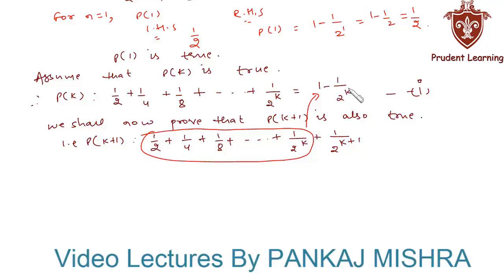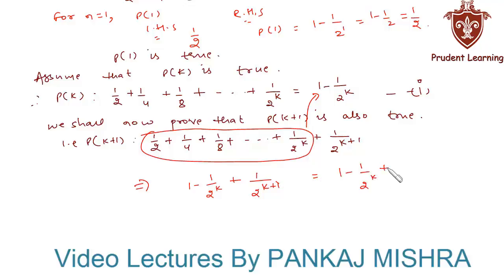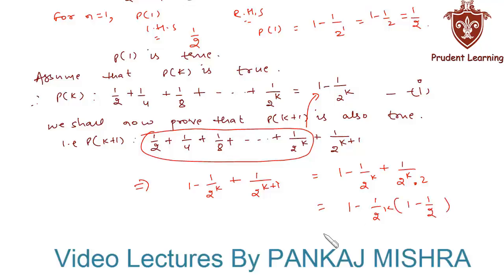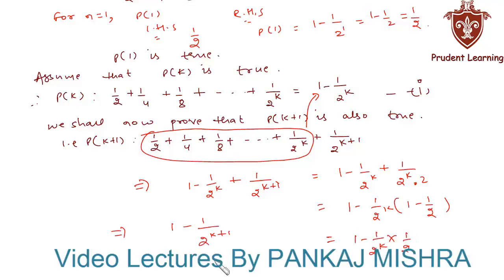Using equation 1, we substitute the sum up to 1/2^k as 1 minus 1/2^k, and keep the remaining term 1/2^(k+1). This can be written as 1 minus 1/2^k plus 1/(2^k × 2). Taking 1/2^k common from both terms, we get 1 minus 1/2^k × (1 minus 1/2), which is 1 minus 1/2^(k+1).